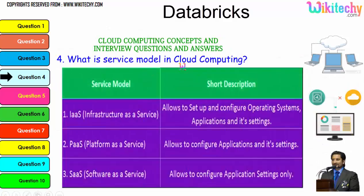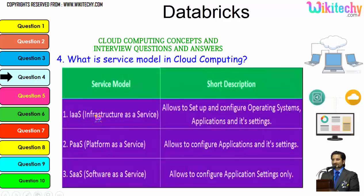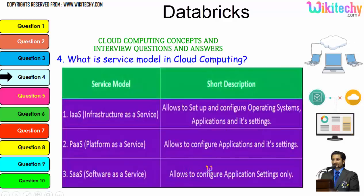The question is: what is the service model in cloud computing? There are three major service models. The first is Infrastructure as a Service, which allows you to set up and configure the operating system, applications, and settings — you are given a server and can put whatever you want on it, including a different operating system. Platform as a Service allocates you a specified operating system and you can install any applications and settings. Software as a Service allows you to configure application settings — that's how the cloud works.